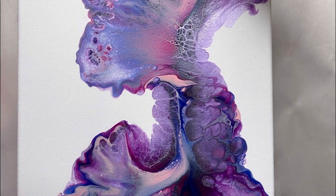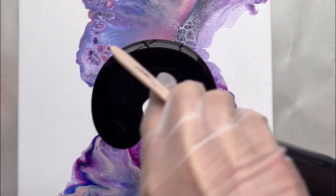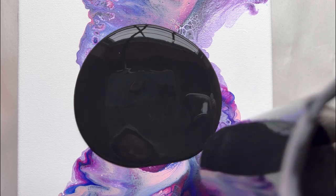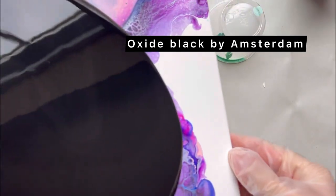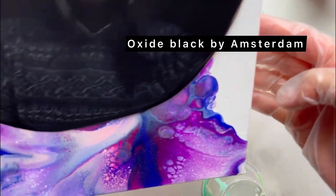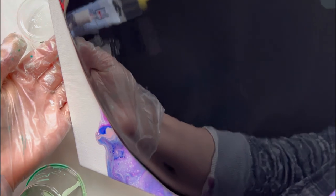In this video today I will be testing vivid intense fluorescent paints by Color Art with a couple of vivid intense opal paints by Color Art. I just wanted to see how they will react and how they will dry in the black background. For the background I'm using Oxide Black by Amsterdam.